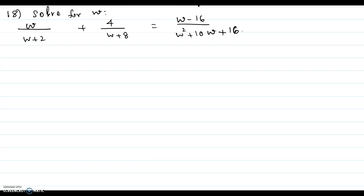Hi, in this video I will be showing you problem number 18 from the practice exam 2 on chapter 4 and 5. Solve for w: w over w plus 2, plus 4 over w plus 8, equals w minus 16 over w squared plus 10w plus 16.